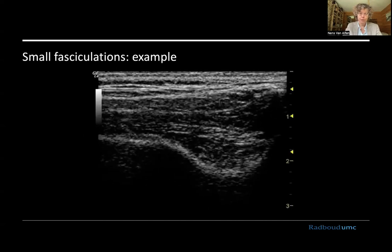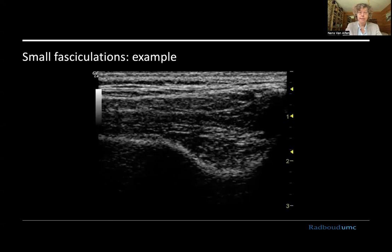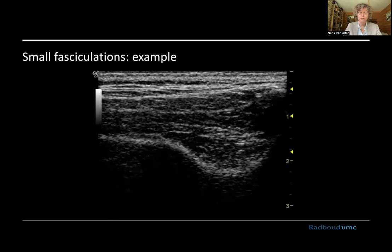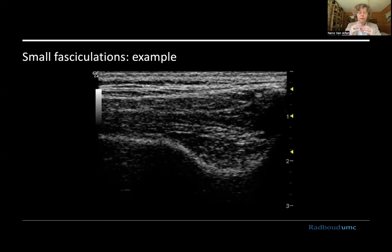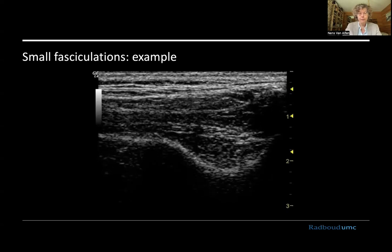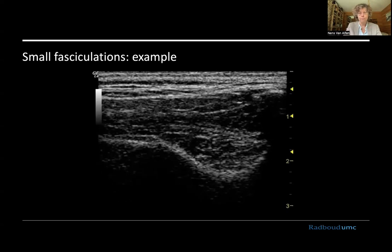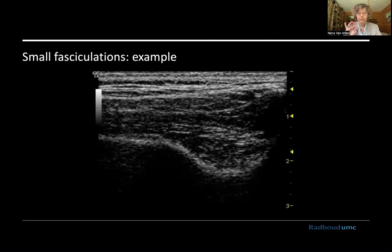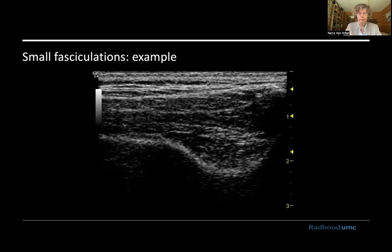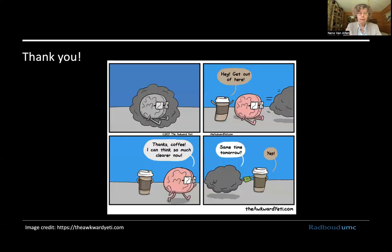Here are some small fasciculations in the temporalis muscle — the scan head is just above the zygoma, and you see the dent in the skull forming the base layer, with really tiny twitchy movements in that deep layer. That's the fasciculation part. Thank you very much — and I just wanted to leave you with a smile. I really love these cartoons by The Awkward Yeti. Thank you very much.